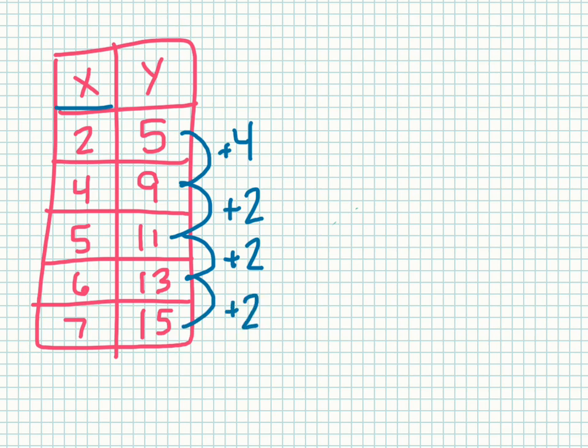Now I need to look at my increase in x from 2 to 4 is 2. 4 to 5 is 1. 5 to 6 is 1. And 6 to 7 is 1.